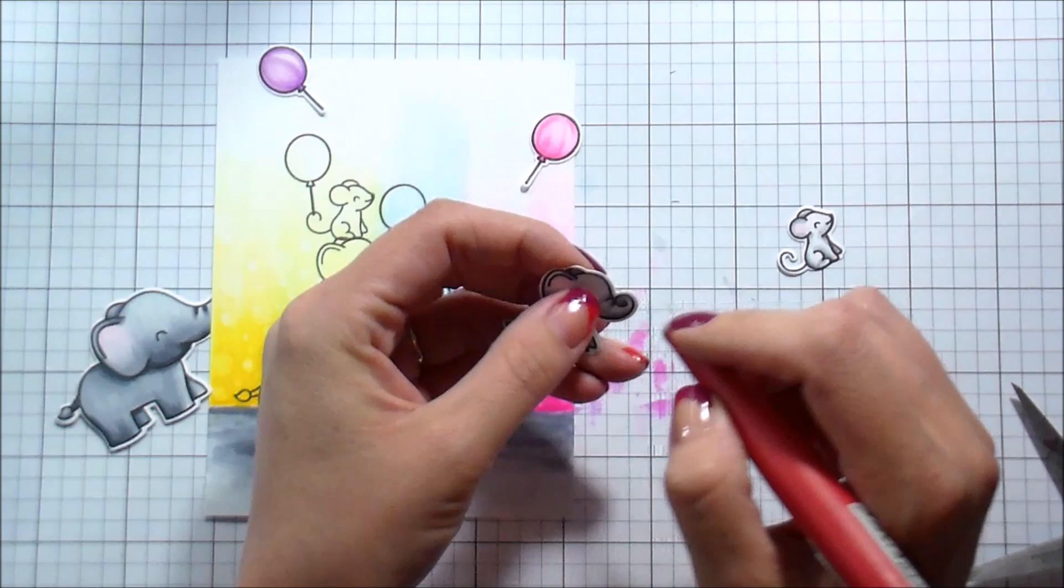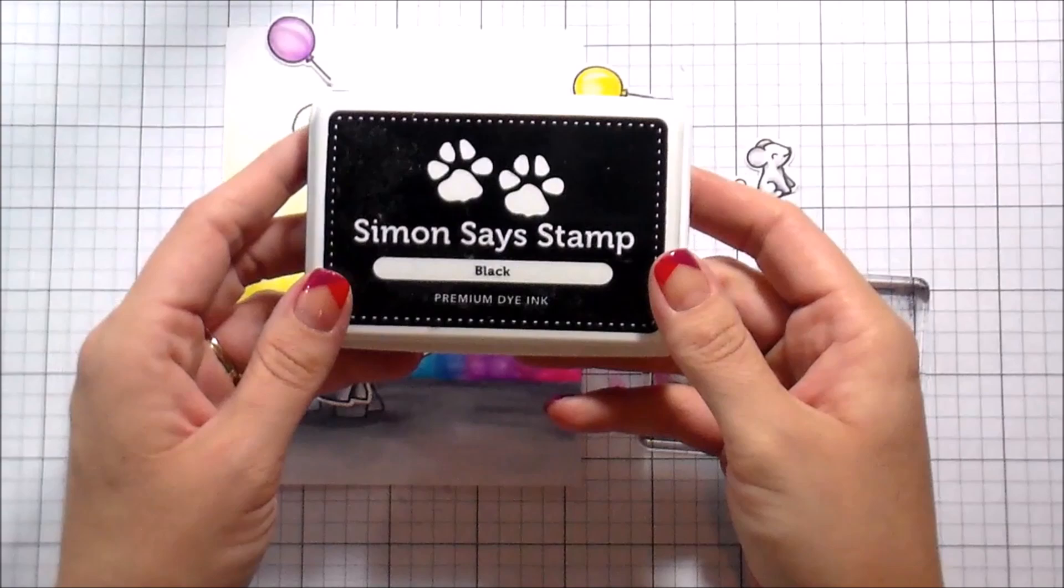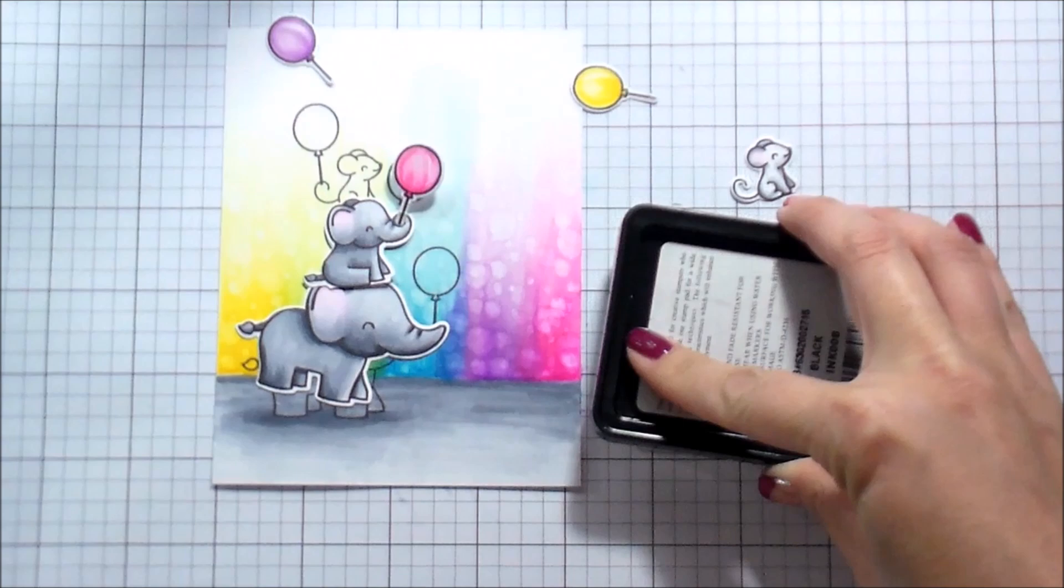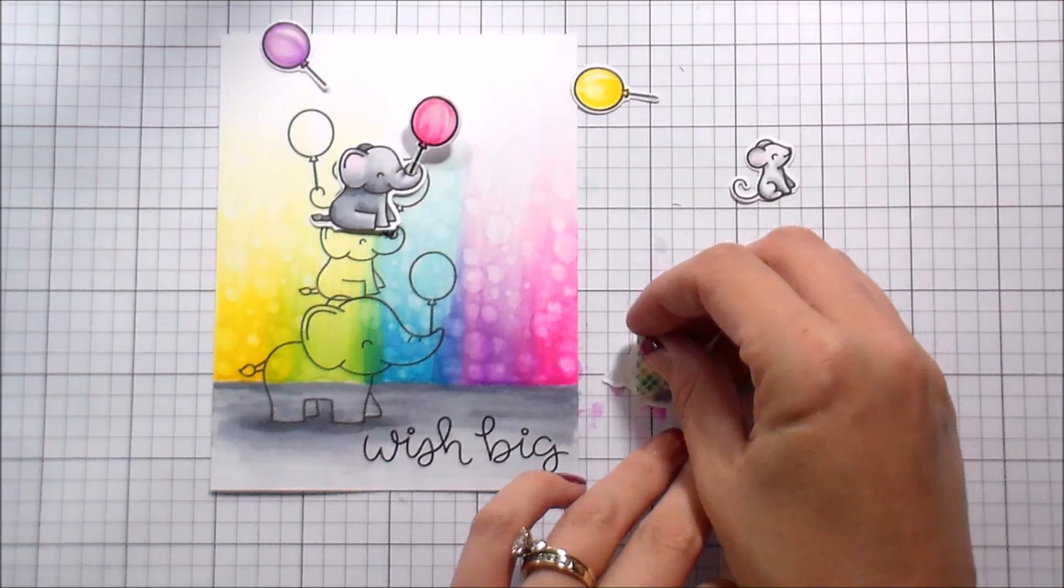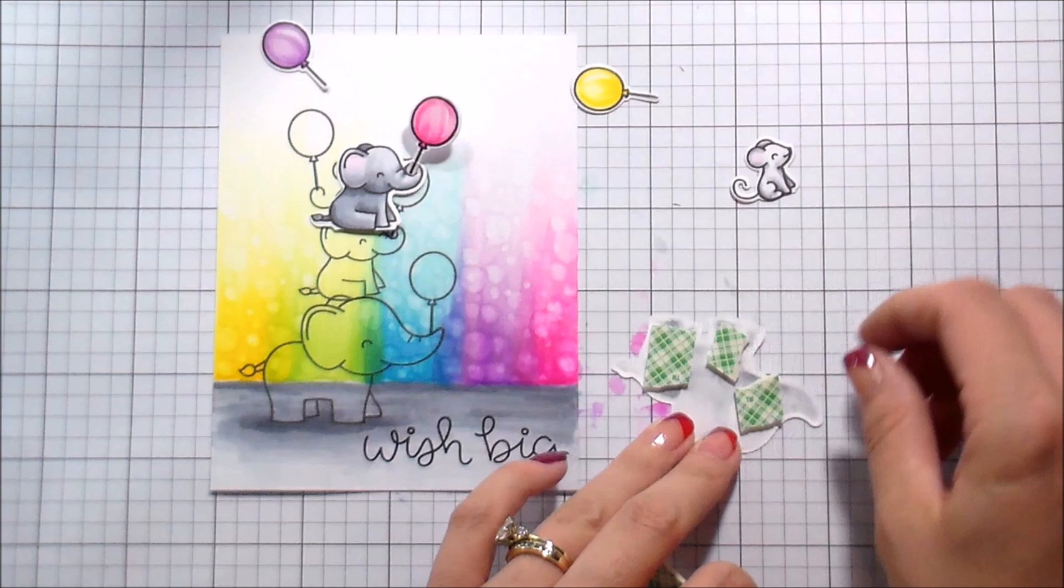The other thing I'm going to do is because of the way that I stamped the balloon, I want this elephant to look like he's holding it. So I'm going to use my craft knife to cut a little slit in his trunk so that I can slide the balloon in. Before I do any adhering of anything to my card, I am going to stamp my sentiment because I intend on popping them up with foam tape and I don't want that to get in the way of my stamping. I stamped the sentiment in Black Simon Says Ink.